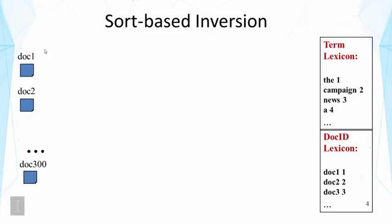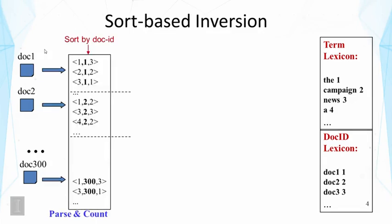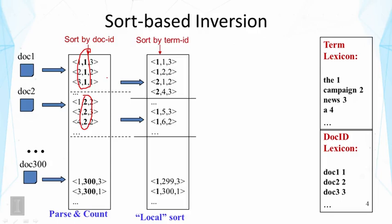The approach works by scanning documents sequentially, parsing each document and counting term frequencies. At this stage, frequencies are naturally sorted by document ID since we process each document sequentially — all terms in document one come first, then document two, and so on. At some point we run out of memory, and before writing to disk we sort the entries by term ID.